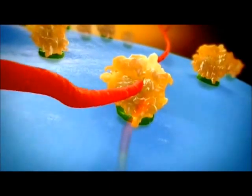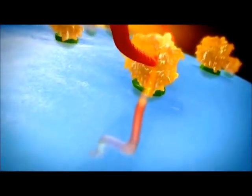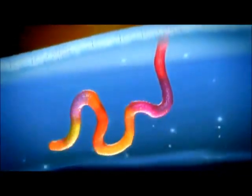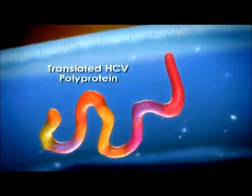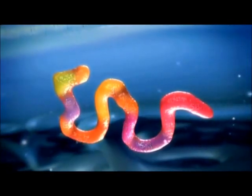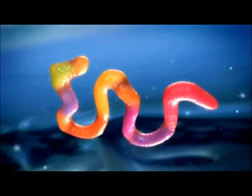These ribosomes then translate the genetic information to produce viral polyproteins over 3000 amino acids long. These polyproteins are made up of 3 structural and 7 non-structural proteins, a total of 10 distinct viral proteins.